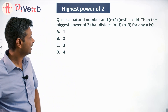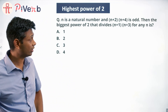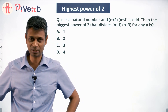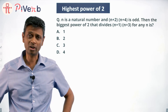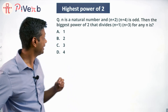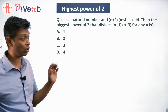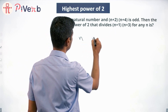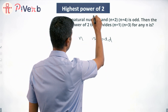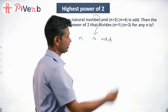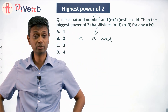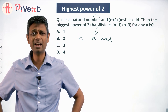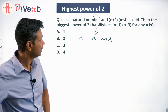n is a natural number and (n+2)(n+4) is odd. Straight away you have to make a simple inference: if a product of two numbers is odd, both of them have to be odd. So n+2 and n+4 are both odd. If n+2 is odd, then n is odd. This first statement is an elaborate way of saying n is an odd number.